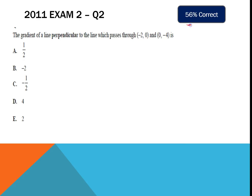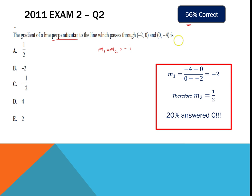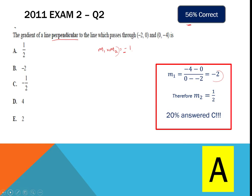Still in 2011, only 56% got the perpendicular gradient question correct. Since it's perpendicular, use the concept that m1 times m2 equals negative 1. Find the gradient of the two points first — we get negative 2 — so the perpendicular gradient is negative 1 over negative 2, which is positive a half. Notably, 20% answered C: they understood a negative was involved but didn't flip the gradient. The perpendicular gradient m2 is positive a half.